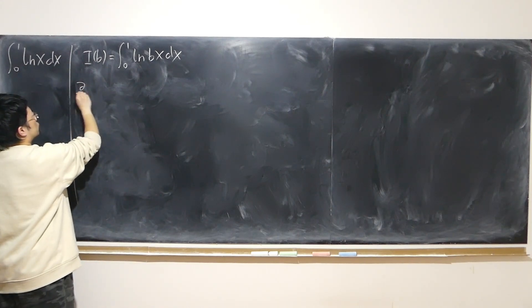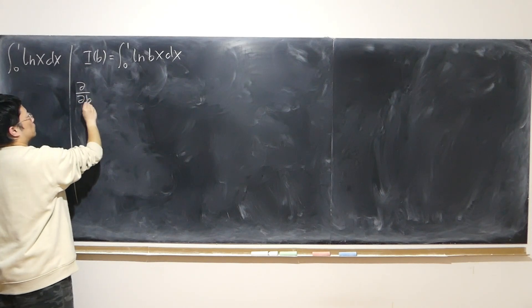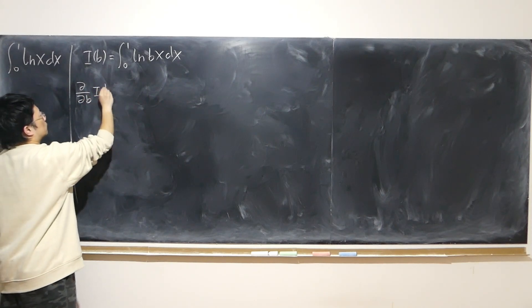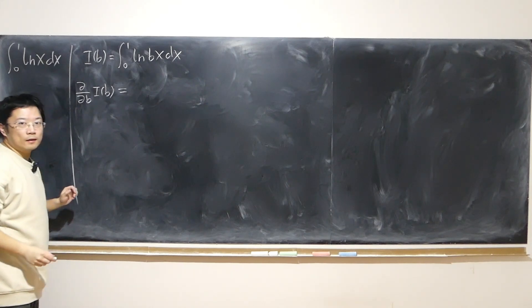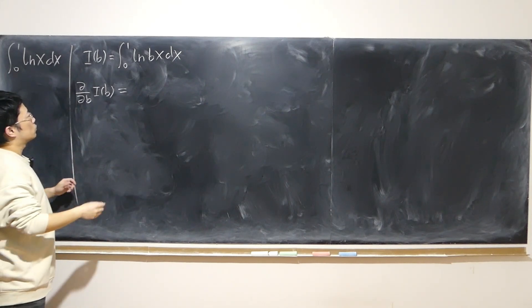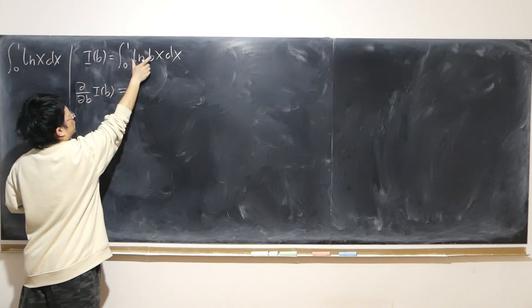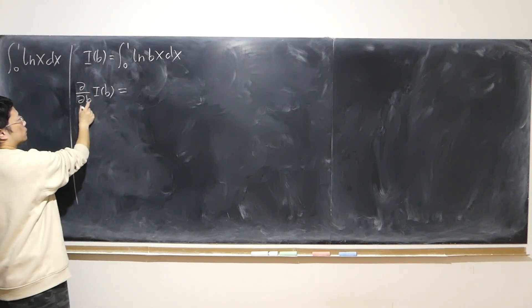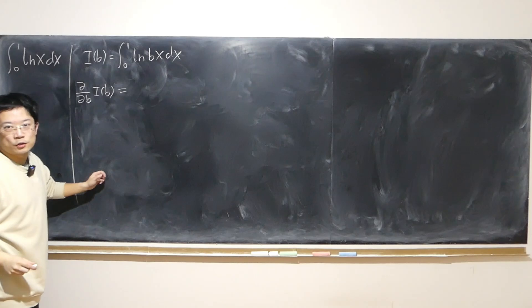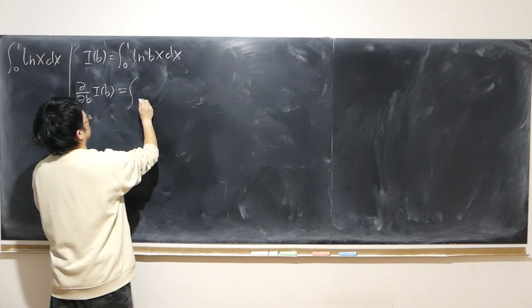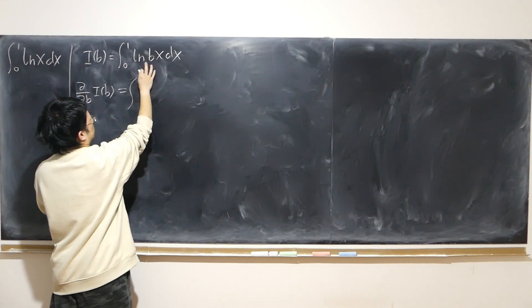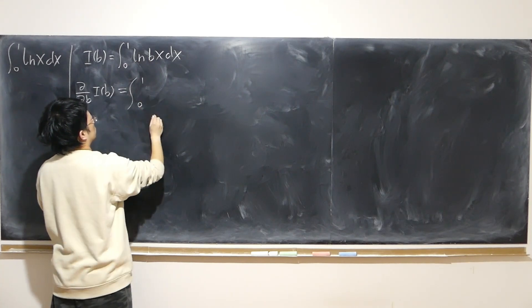Now, if I differentiate with respect to b, what's going to happen? First of all, what I'm doing now is that first I do integration, then I do differentiation. Somehow I can switch the order. First, I do the differentiation inside, then do the integration.